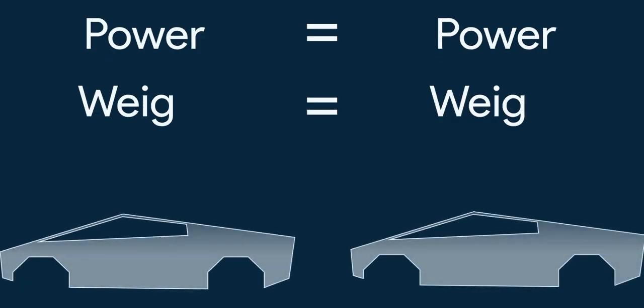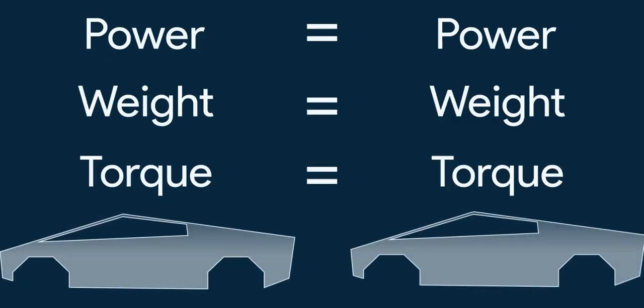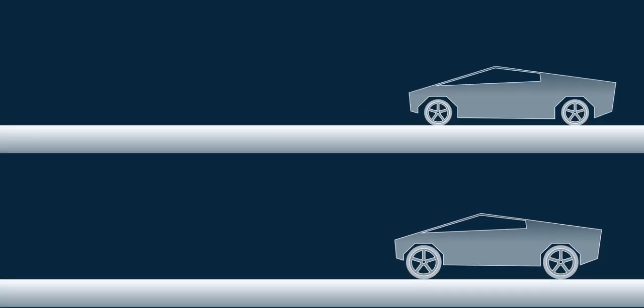Two cars with same power, same weight, and same torque at wheels, but one with smaller wheels and one with bigger one. So, which one would accelerate faster?